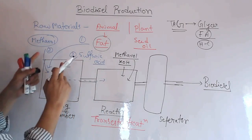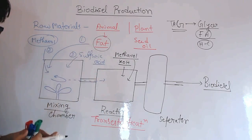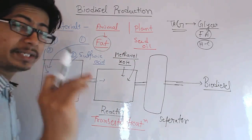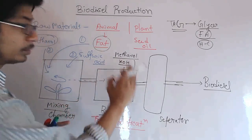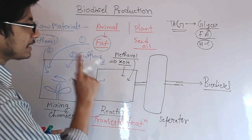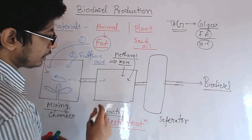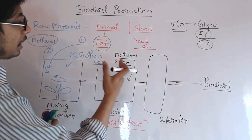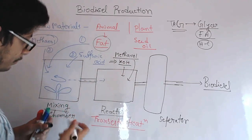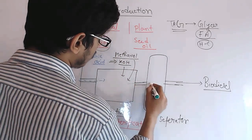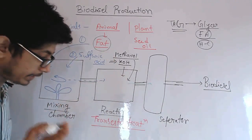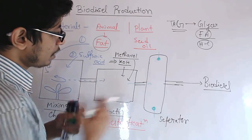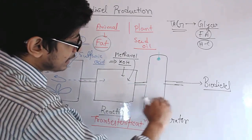Once everything is inside the reactor — methanol, KOH, and fat together — the three major materials facilitate the reaction and the production of biodiesel. After this process, crude biodiesel is produced, which also contains some methanol content and some glycerol backbone components, so it is an impure biodiesel. That biodiesel is then brought from the reactor to the separator. In the separator, two different sensors are placed inside.